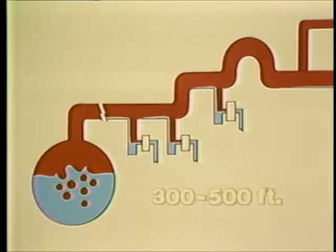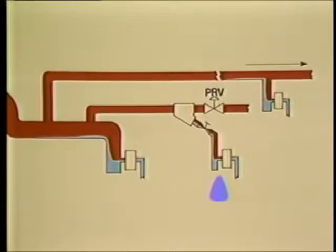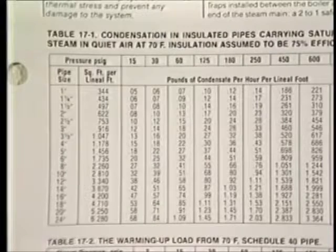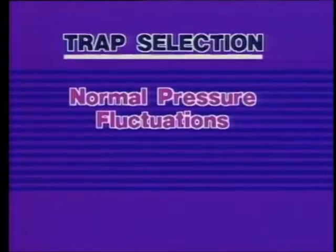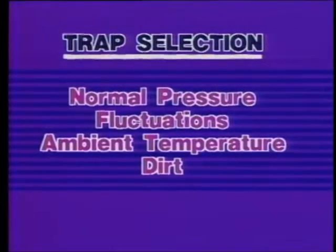Steam mains should be dripped every 300 to 500 feet. Also, install drip traps immediately ahead of risers, expansion loops, pressure reducing valves and temperature regulators, at the end of steam mains, and on long runs of branch lines. Select a trap based on the calculated condensate load, not on the pipe connection size. Other considerations in trap selection are normal steam pressure, fluctuations in pressure, ambient temperatures, and the likelihood of dirt in the system.